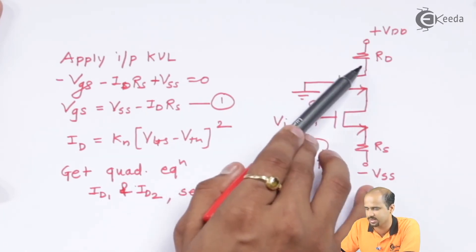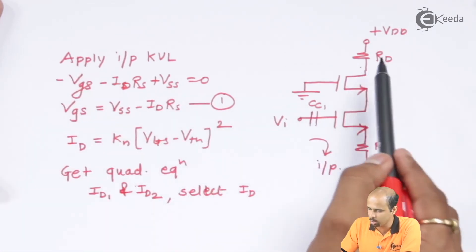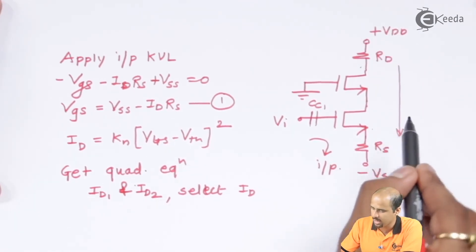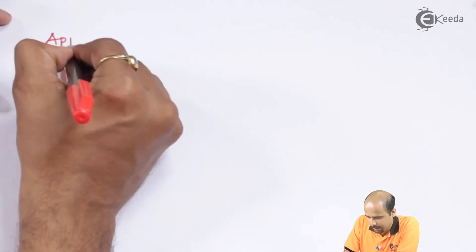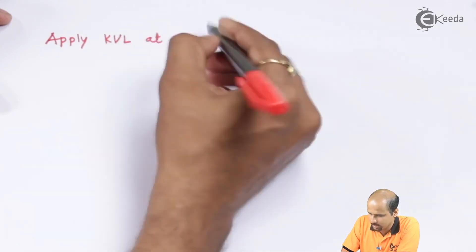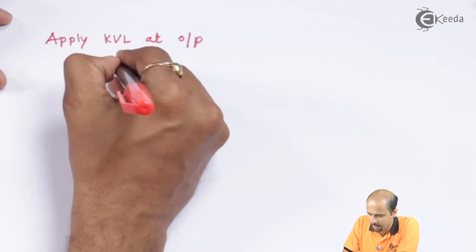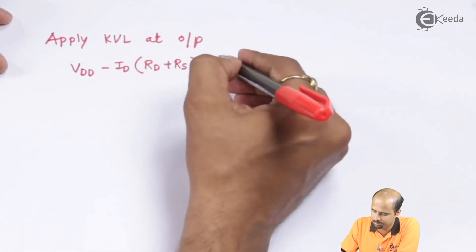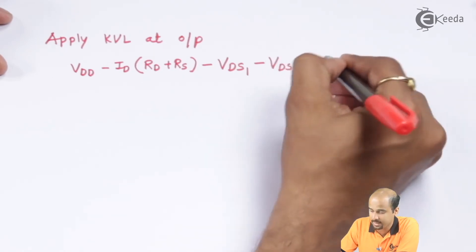Since ID is common to both transistors, we can directly apply the output KVL to get VDS1 and VDS2. Applying KVL at the output loop, we start from VDD and subtract the voltage drops across all resistances. We write: VDD minus ID·(Rd plus RS) minus VDS1 minus VDS2 plus VSS equals zero.